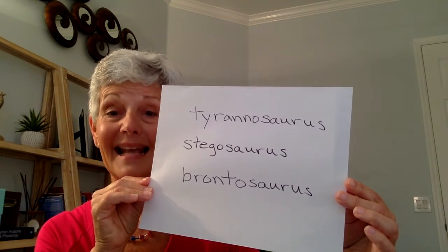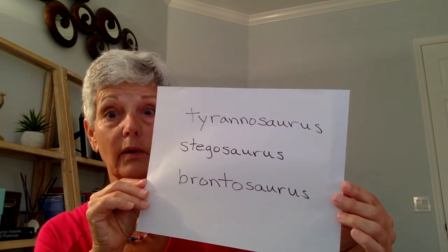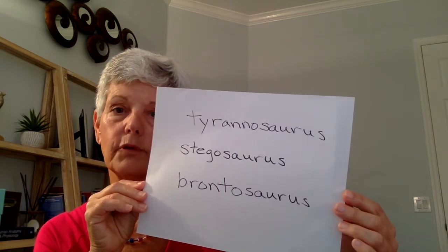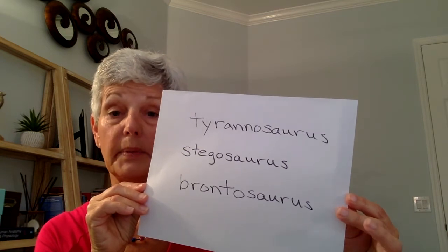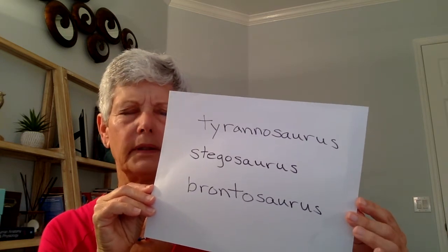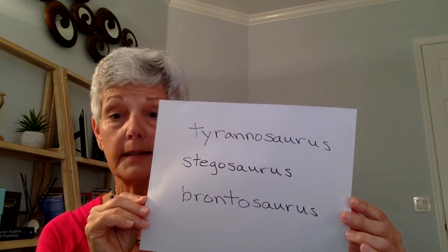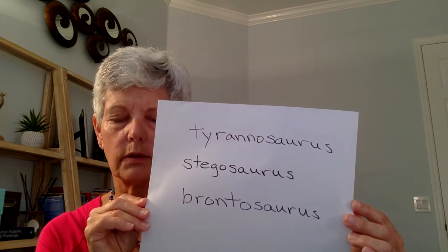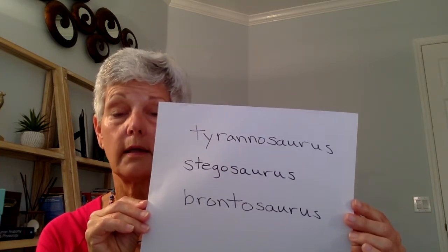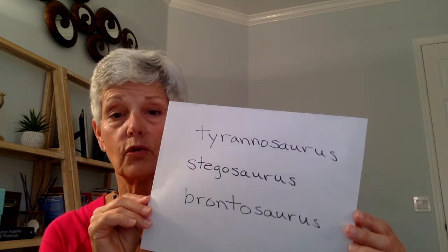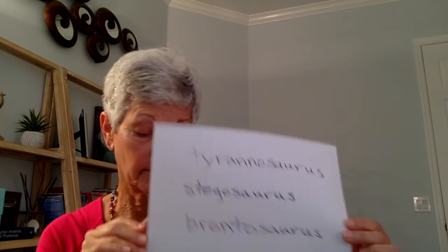They all end in S-A-U-R-U-S, which is taken from the Greek word which led to the Latin word for reptile or lizard. So a Tyrannosaurus is a big scary lizard, and so forth. I believe Brontosaurus means thunder lizard, if I remember correctly. They're all dinosaurs. So they all have the same root word, Saurus, with a prefix that describes what kind of reptile or lizard they are.